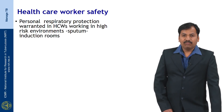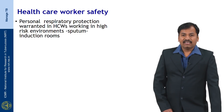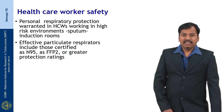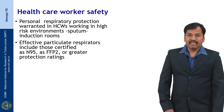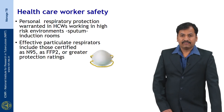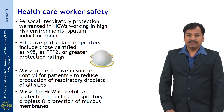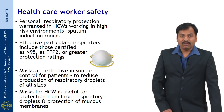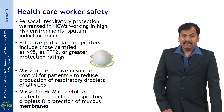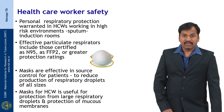The personal protective equipment warranted for health care workers in high risk environments like sputum collection and induction rooms includes effective particulate respirators certified as N95 masks or FFP2 masks or greater protection rating masks. This is a N95 mask which is usually used. Masks are effective in source control for patients to reduce the production of respiratory droplets of all sizes, whereas the mask for health care workers is useful for protection from large respiratory droplets and protection of the mucous membrane.